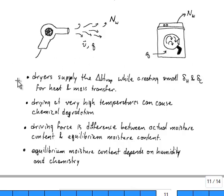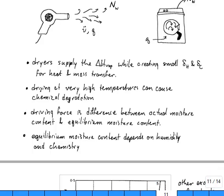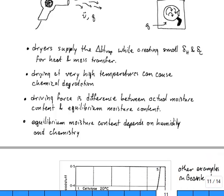The key idea of a dryer is that they're supplying the heat of vaporization while creating a small thermal and concentration boundary layer for the heat and mass transfer processes. Drying at too high of a temperature can cause chemical degradation and so you always want to be careful to avoid that.